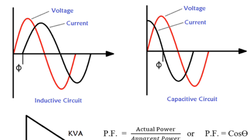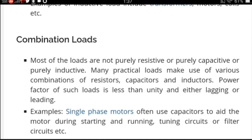An inductive load causes the current wave to lag the voltage wave by an angle phi. The power factor of an inductive load is lagging. Common examples are transformers, motors, and coils. Induction motors, especially in industries, consume more reactive power, hence the power factor is low, requiring capacitor and inductance combinations.